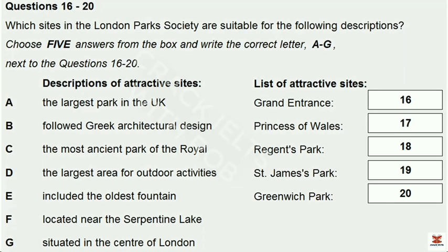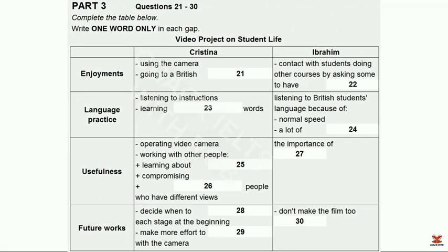Finally, we'll visit Greenwich Park, which is the oldest enclosed royal park. It's situated on a hilltop with impressive views over the River Thames to the Docklands and the City of London. It contains several historic buildings, including the Old Royal Observatory, the Royal Naval College, the National Maritime Museum and the Queen's House. Well, it's time to go — a ten-minute walk and we'll be at Hyde Park. That is the end of Part 2. You now have thirty seconds to check your answers.